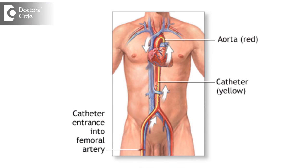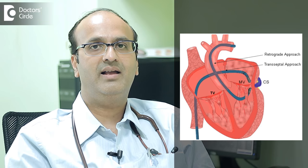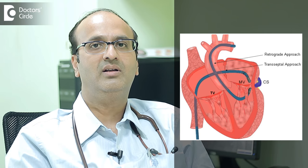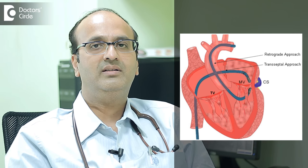For the aortic valve, we take a trans arterial access from the groin and cross the valve retrogradely across the valve and dilate the valve again with a special balloon, which is used for aortic valvuloplasty.